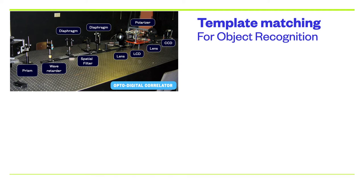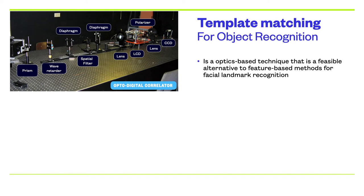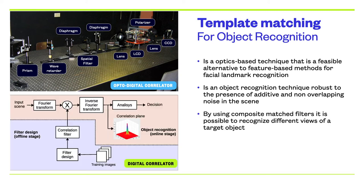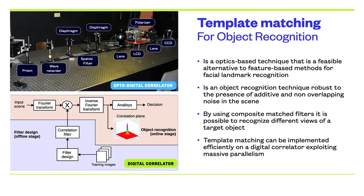Template matching is an optics-based technique that is a feasible alternative to feature-based methods for facial landmark recognition. It is an object recognition technique robust to the presence of additive and non-overlapping noise in the scene. By using composite matched filters, it is possible to recognize different views of a target. Template matching can be implemented efficiently on a digital correlator, exploiting massive parallelism.